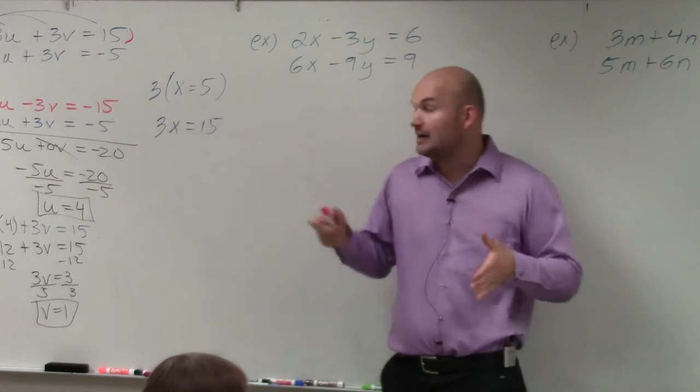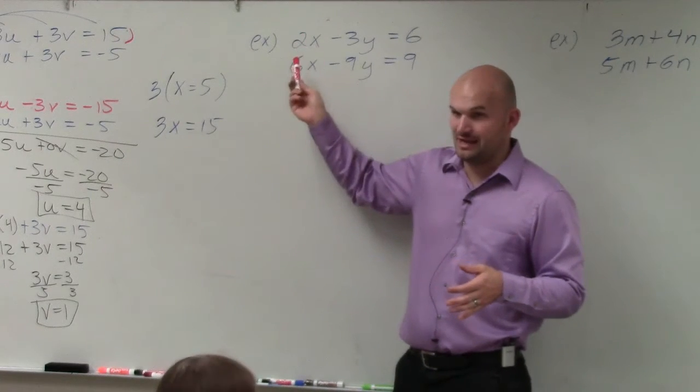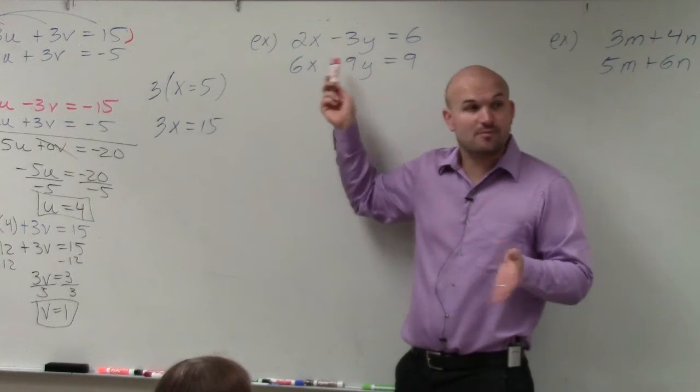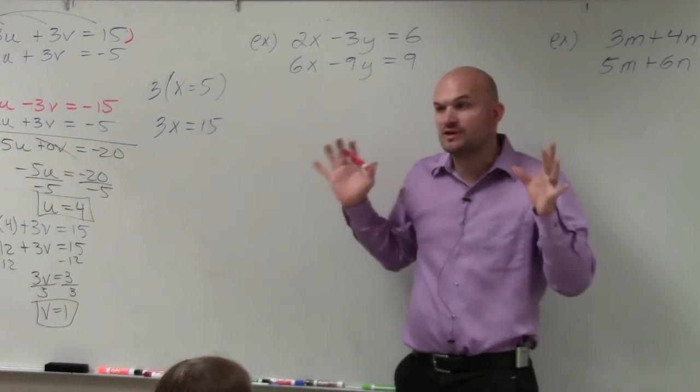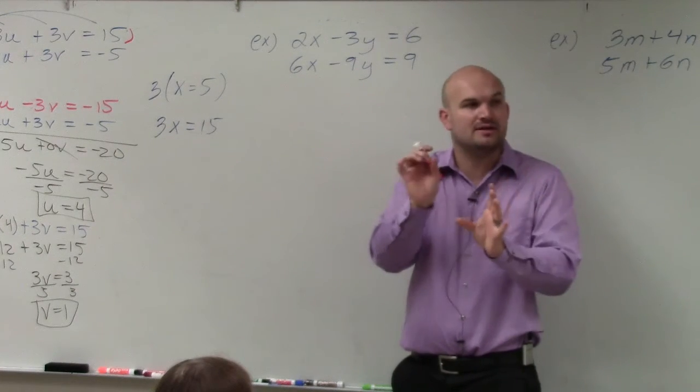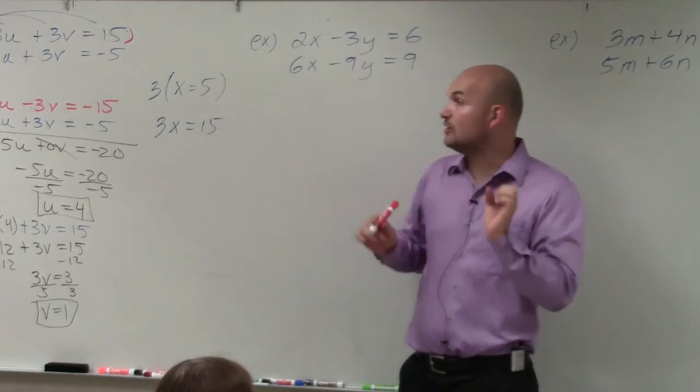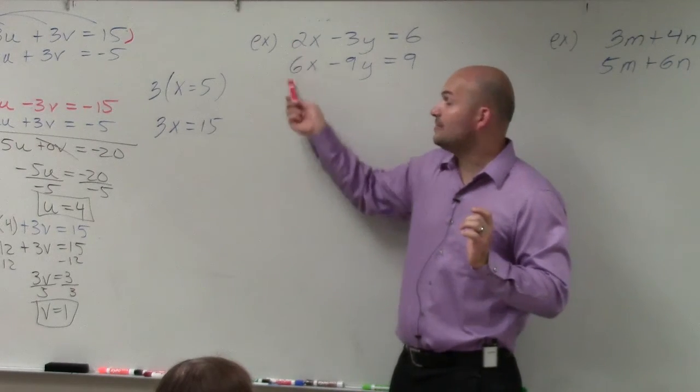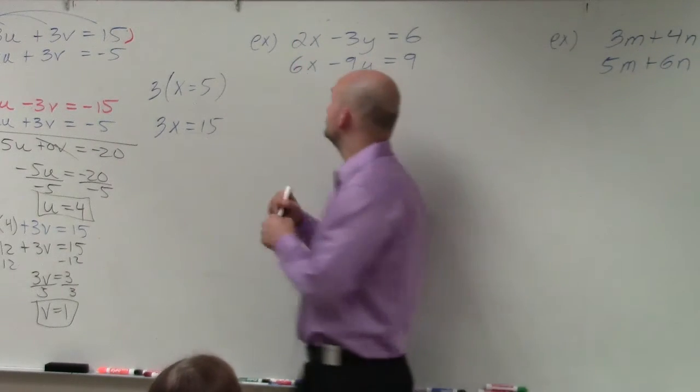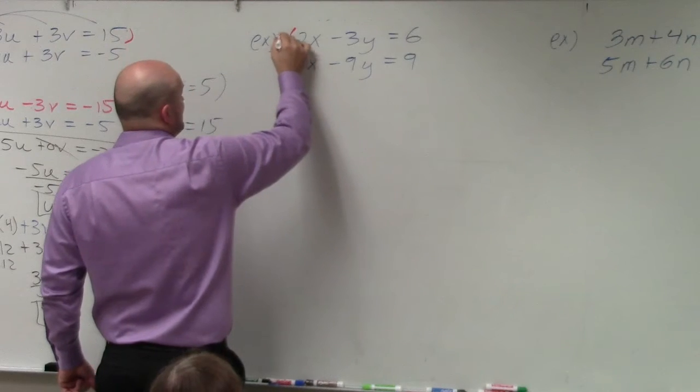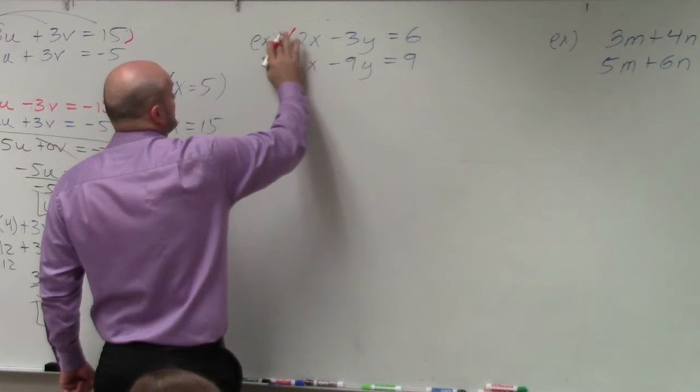And you want to choose a multiplier that's going to make one positive, one negative. Now, you guys can see that this works for both the x and the y, but you just really want to focus with one variable. Don't get caught up in eliminating both variables. We really only want to eliminate one variable. So I'm going to try to eliminate the x. So to do that, as we discussed, I'm going to multiply by negative 3.